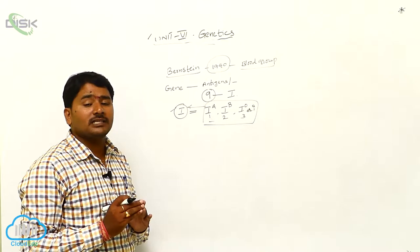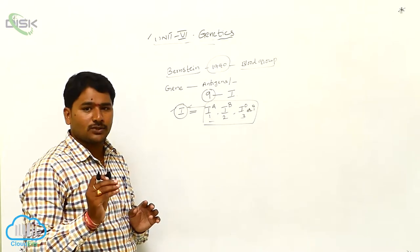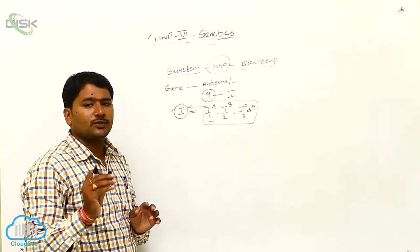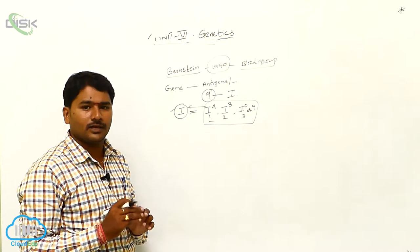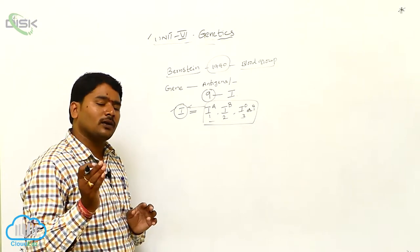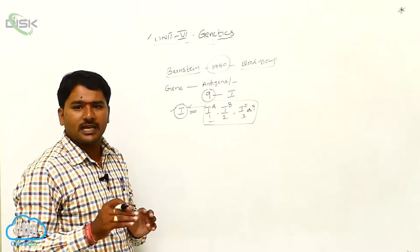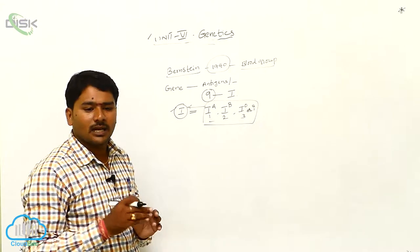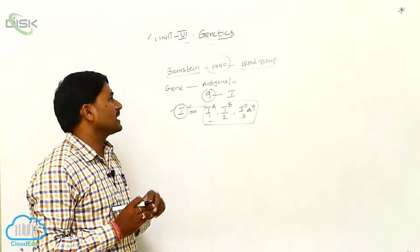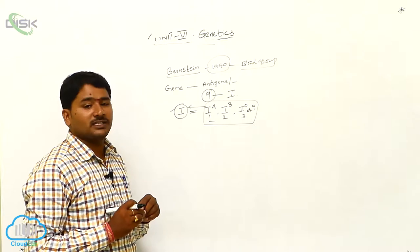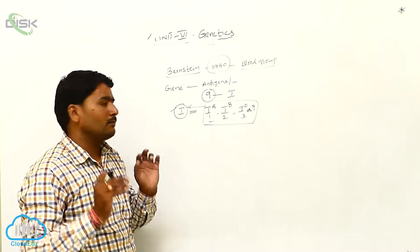Antibodies are agglutinins, also called isoagglutinins or isohemagglutinins. Antibodies interact with the antigens and form clotting. This is about the Bernstein experiment on the genetic basis of blood groups.